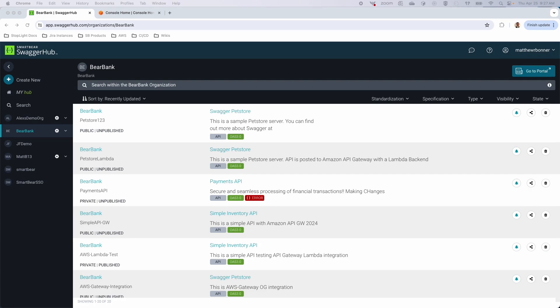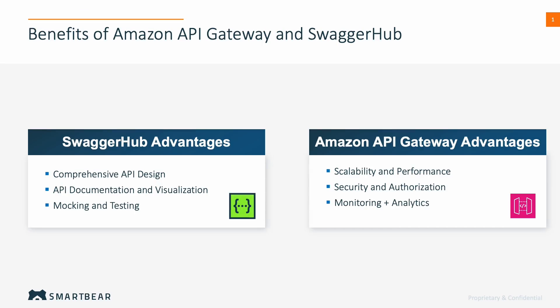Let's look at some benefits of Amazon API Gateway and SwaggerHub. SwaggerHub has some real strengths in comprehensive API design. You want to provide a collaborative platform for designing, documenting, and testing APIs using an open API specification. Users can create well-defined API contracts that adhere to industry standards. SwaggerHub automatically generates interactive API documentation from the open API spec, making it easy for developers to understand API endpoints, parameters, and responses.